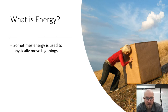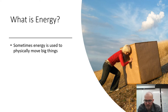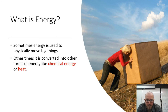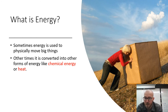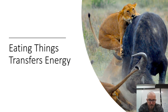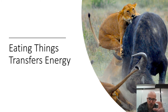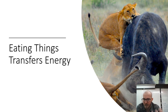Continuing with energy — sometimes we use energy to move large objects or any object really, just moving items physically. Other times we convert that energy into other forms like chemical energy or heat. We need to keep our body a certain temperature to survive, so we use a lot of energy just maintaining that internal body temperature. Eating things transfers energy from one organism to another — that's how we get our energy.